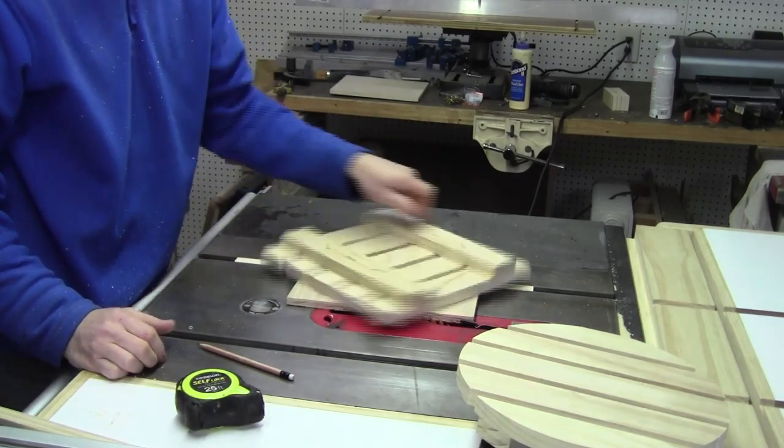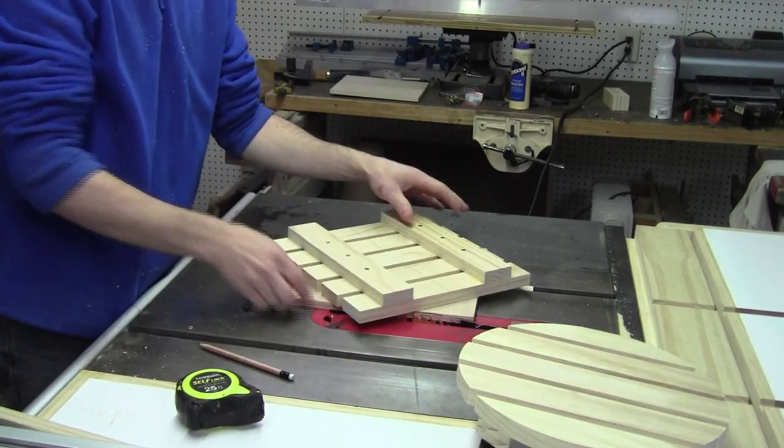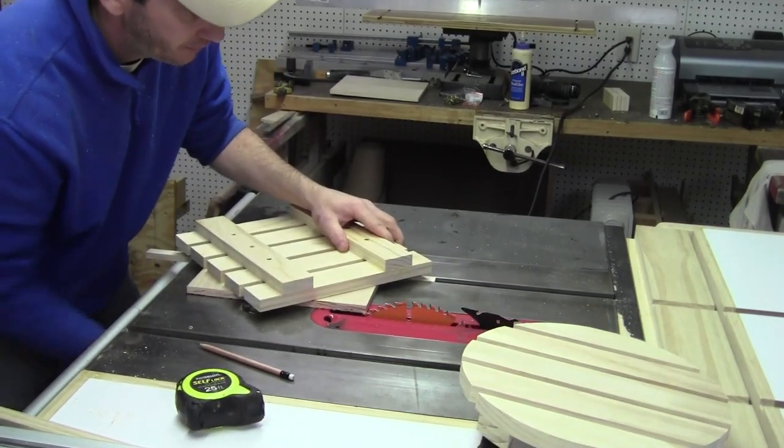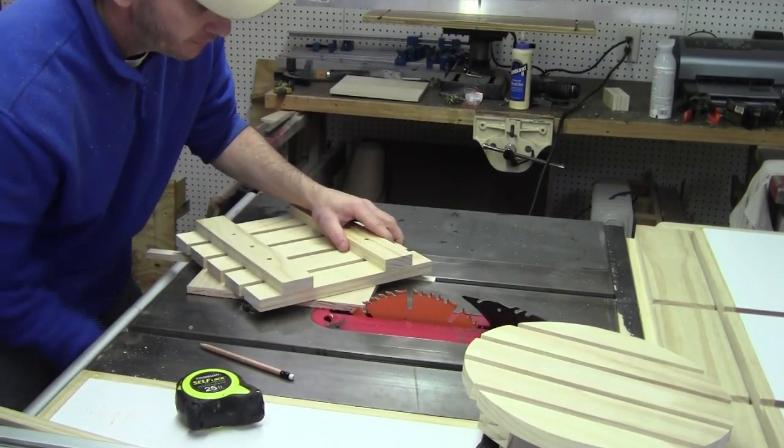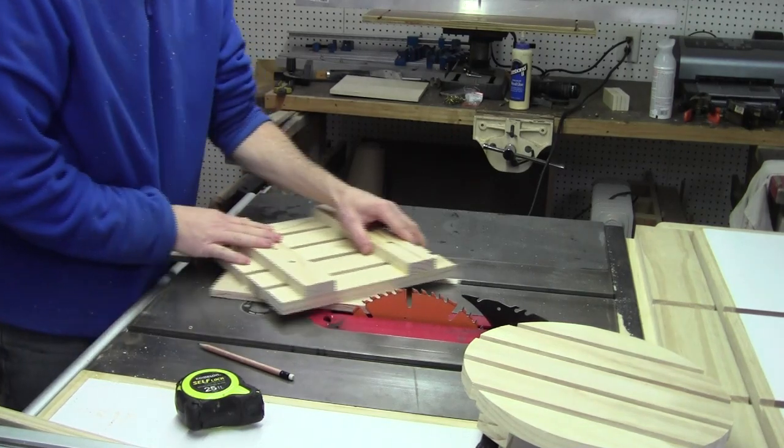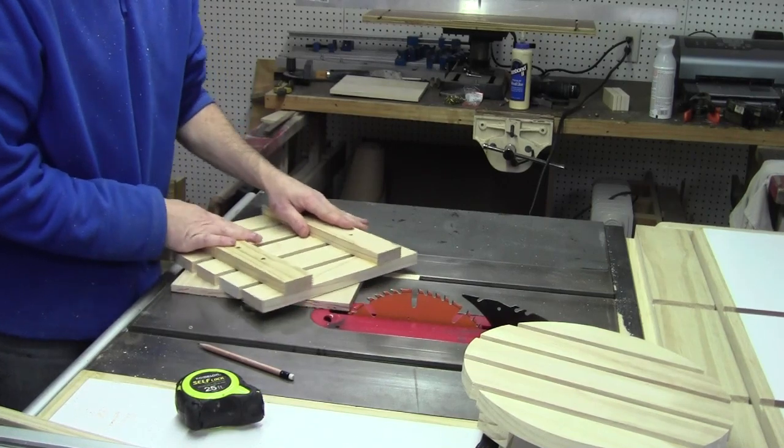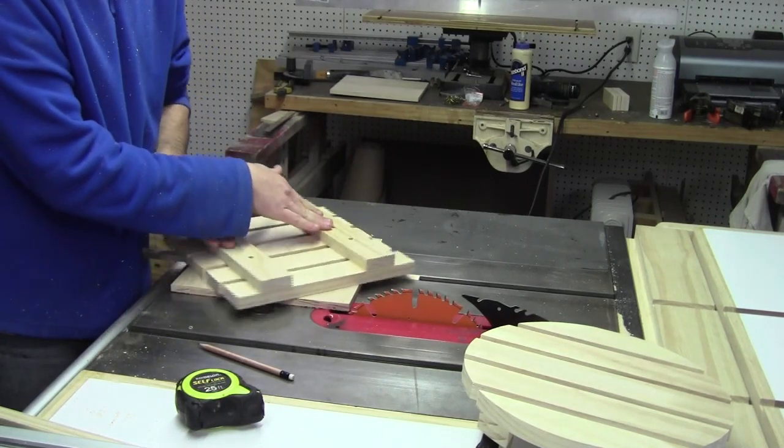How I like to cut my circles is to raise my blade up and cut off each corner until all the corners are gone and then slowly round it off.